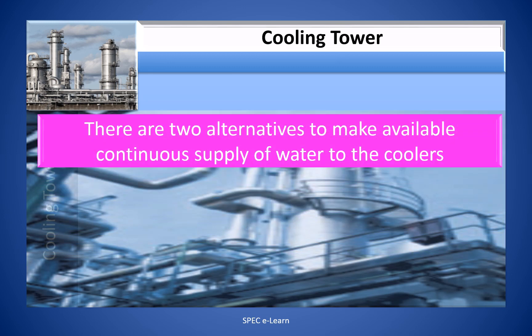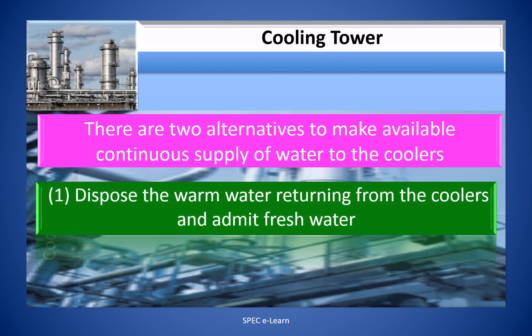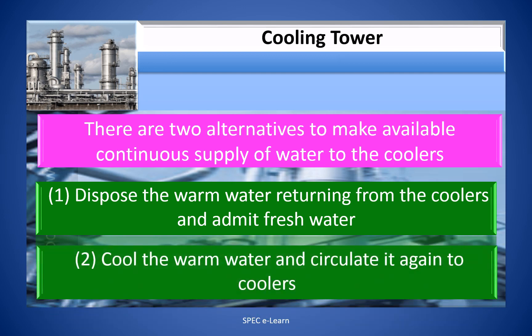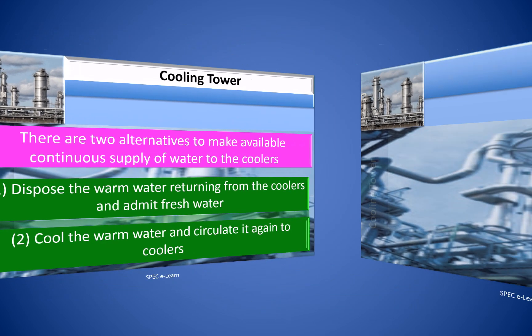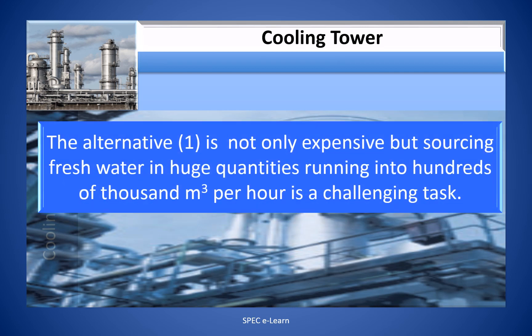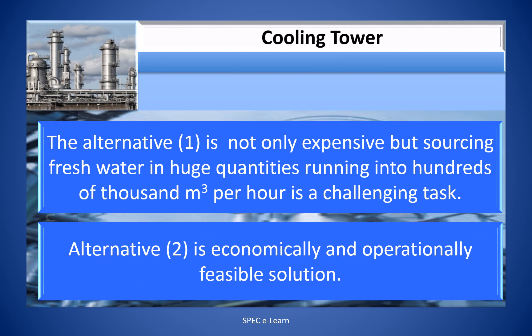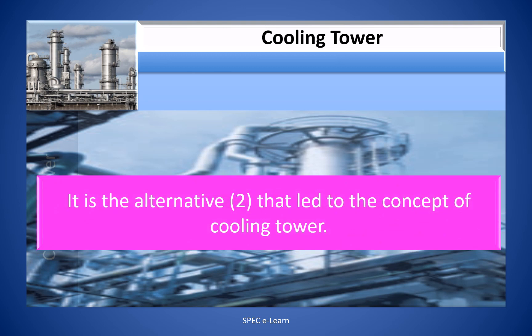The exit or return water cannot be reused as-is because it is warm. There are two alternatives: 1. Dispose of the warm water and admit fresh water. 2. Cool the warm water and circulate it again. Alternative 1 is expensive and sourcing fresh water in huge quantities is challenging. Alternative 2 is economically and operationally feasible — and it is this alternative that led to the concept of the cooling tower.